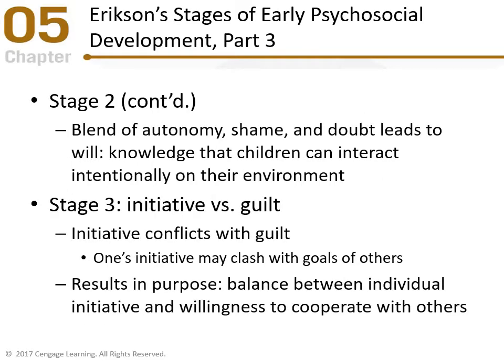Remember that the blend of autonomy, shame, and doubt leads to will — that desire to do something. Children start to realize that they can interact intentionally with their environment and actually affect others in it. Two-year-olds are all about 'me, me, me — I can do this.' That's when that will begins. The key word for this stage is will.